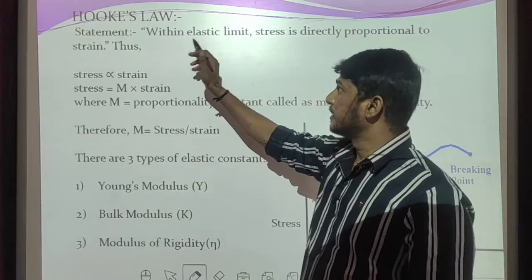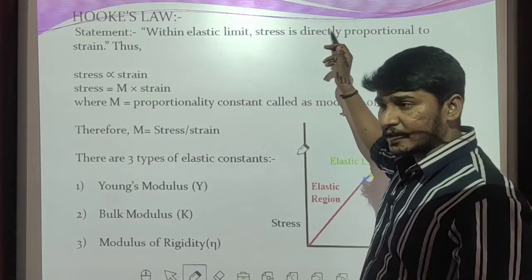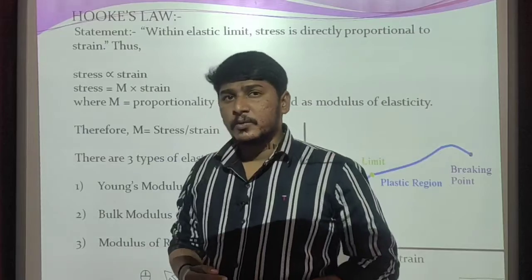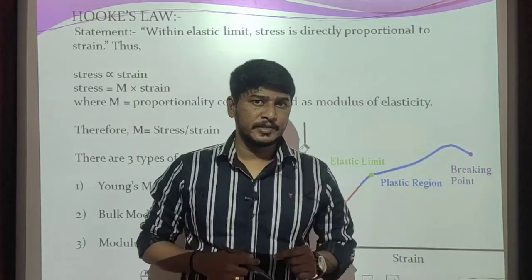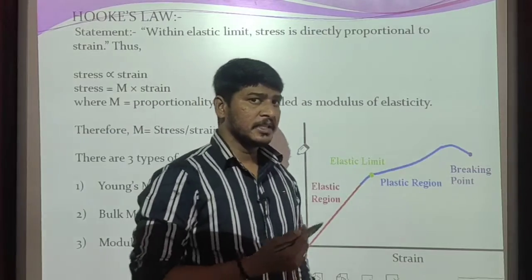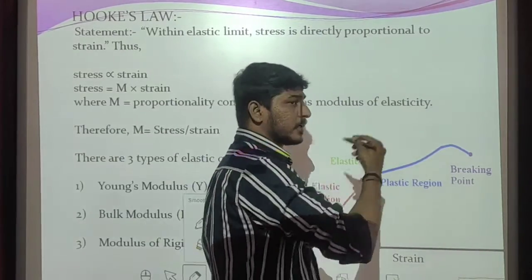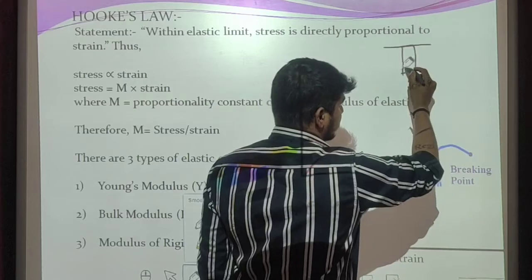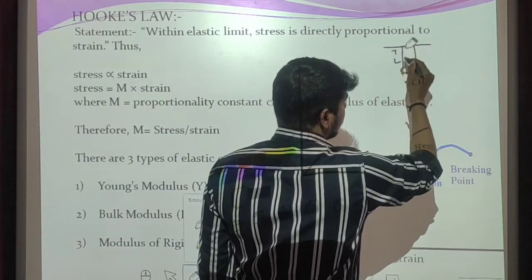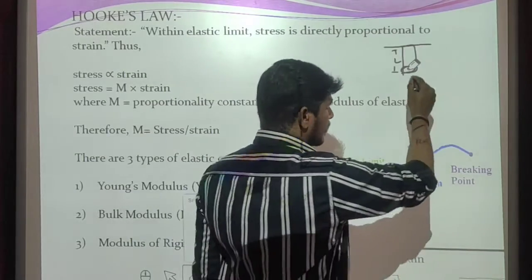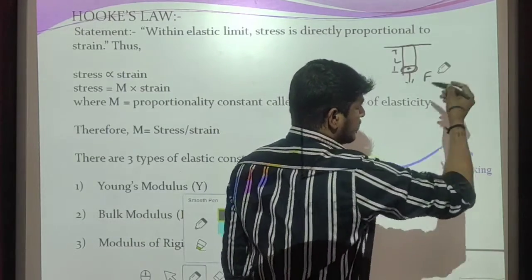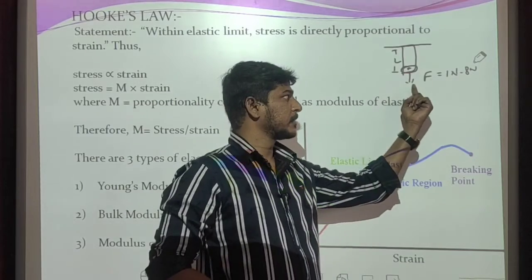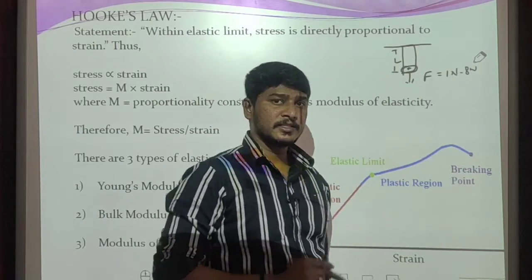Hooke's law states that within elastic limit, stress is directly proportional to strain. We have already discussed elastic limit — we took an object, fixed one end, with cross-sectional area A and length L, then applied a deforming force ranging from 1 Newton to 8 Newton. When we remove this deforming force, the body regains its original size and shape.